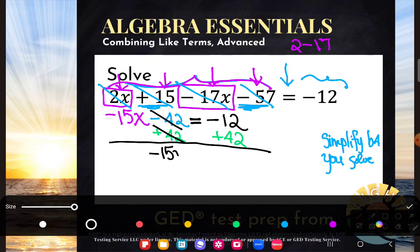So subtracting 42 and adding 42 are opposites. They'll cancel. Only thing left on the left-hand side will be negative 15x. My equal sign stays nice and steady. And negative 12 plus 42 is 30.